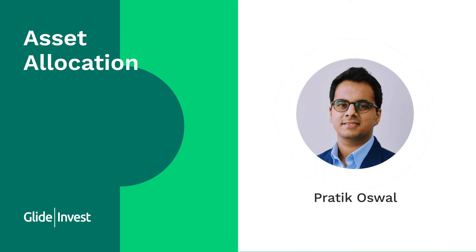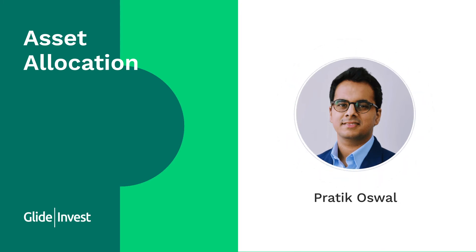The last asset class is currencies and commodities, which can also include cryptocurrency. Gold is today the most common commodity — almost every family has some amount of gold as an investment. Currencies and commodities are good options for asset allocation. Once you've understood the asset classes, the idea is to split your money among them according to your risk profile. If you are higher risk, you should have more allocation towards equity and less towards debt, commodities, and international equity.